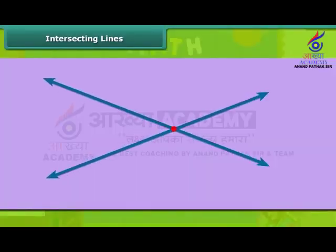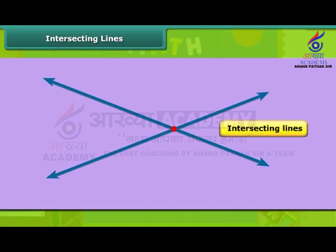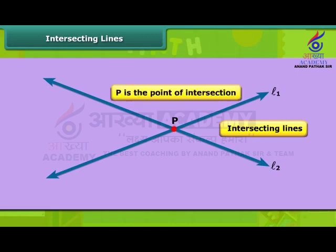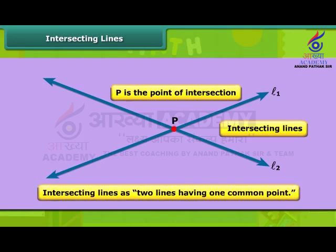When two lines pass through a single point, we call them intersecting lines. Two lines L1 and L2 pass through a point P — then L1 and L2 are intersecting lines and P is the point of intersection. We can also define intersecting lines as two lines having one common point. A variety of examples around us has intersecting lines.